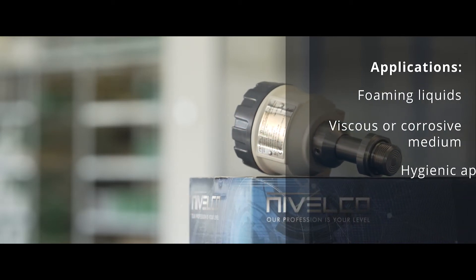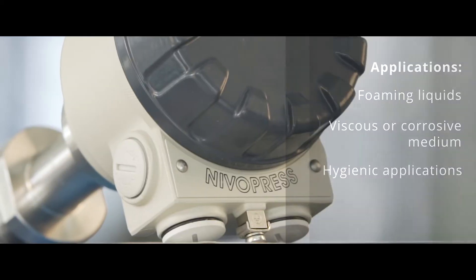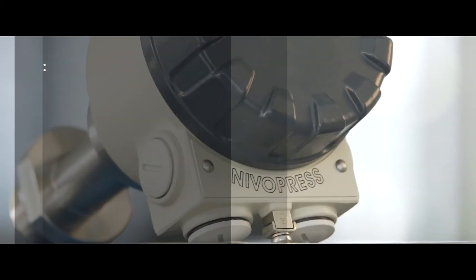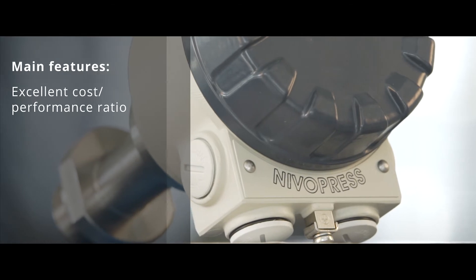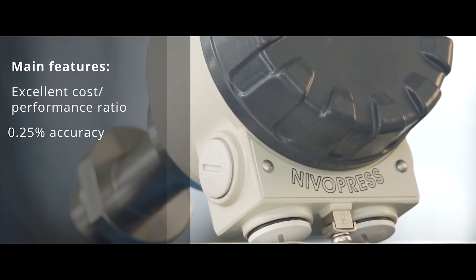The main features of Nivelco's Nivel-Press D are the following: excellent cost-performance ratio, 0.25% accuracy, gauge or absolute pressure measurement, wide pressure range, wide variety of process connections, and temperature compensation.